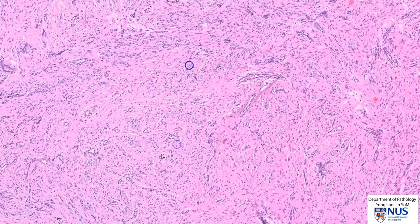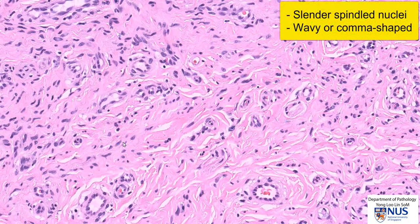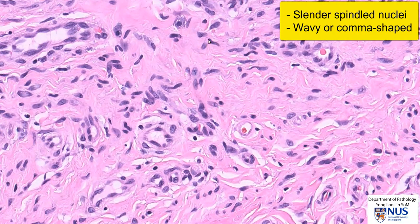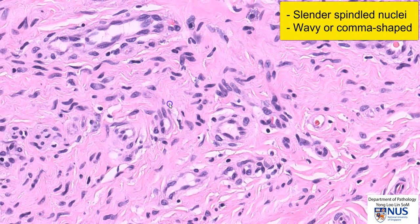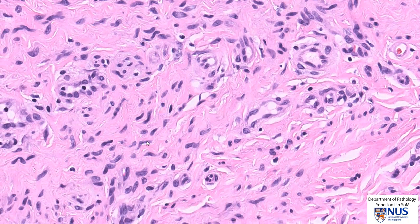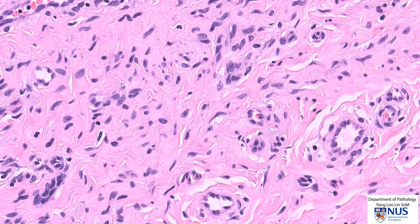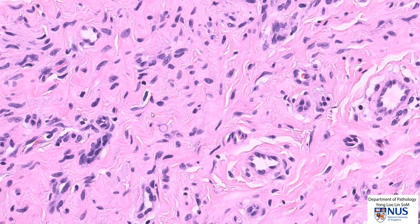The types of cells that we can see are spindle cells. These nuclei are quite elongated and quite slender. Some of them appear somewhat wavy, and some are actually almost comma-shaped. You can see a wavy nucleus here, and in general these nuclei have tapered or pointed ends. So we have spindle cells with wavy, slender nuclei.